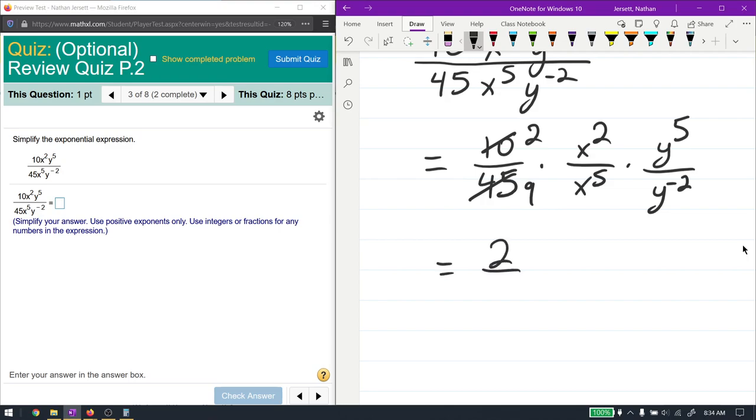Divide top by 5 is 2, divide the bottom by 5, which is 9. Now here I have like bases, x and x, that are dividing, so once again, I subtract. So we have 2 over 9, then multiplied by, when I do this, I'm going to have it on top, x to say 2 minus 5, 2 minus 5 is negative 3, which is over 1.